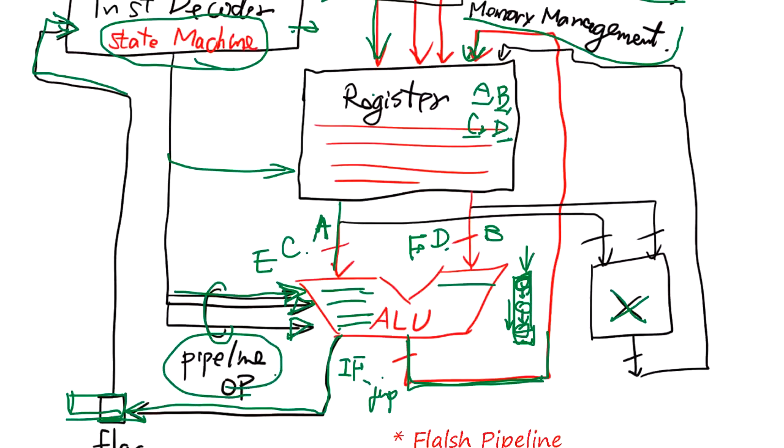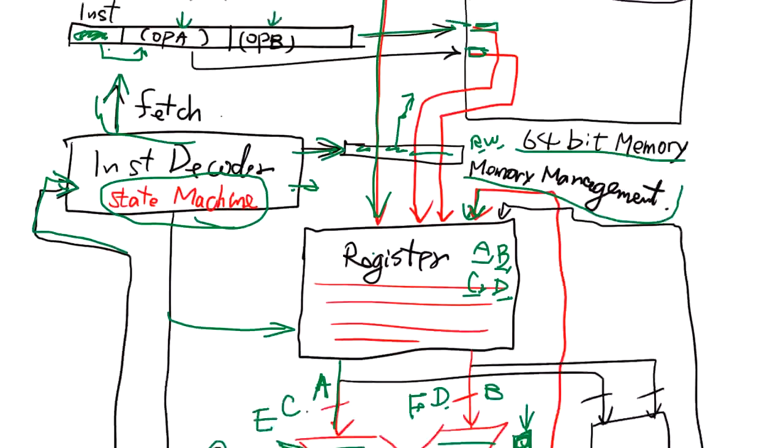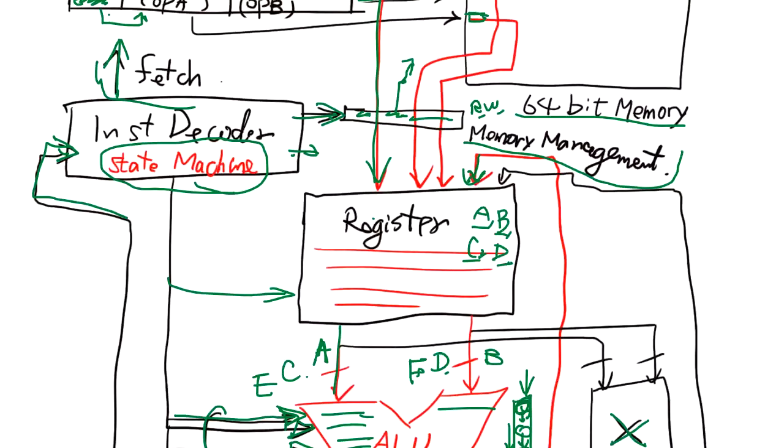Now, the RISC computer is easy, simple. The problem with CISC is this CISC has a microcode memory here, separate memory. And state machine is not just state machine. It's read microcode instruction from microcode memory and execute.